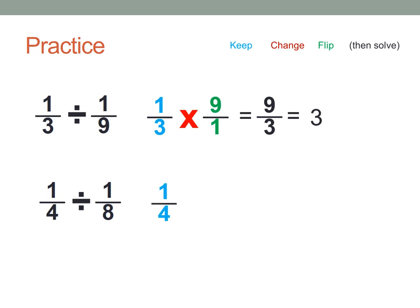How about the second one? Keep, change, flip, and then we solve. 1 times 8 is 8, 4 times 1 is 4, and that simplifies to 2.